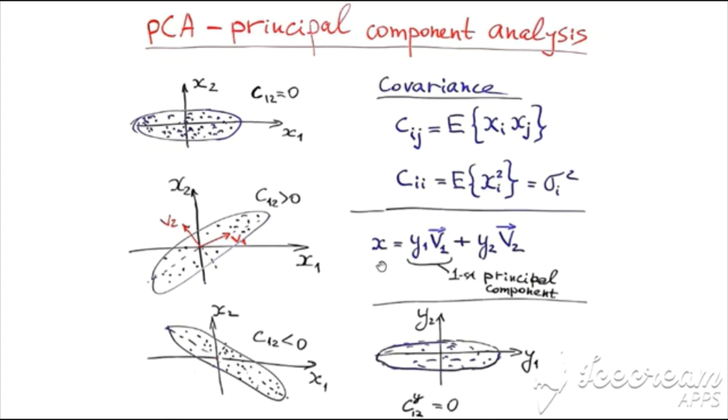In this case, our random vector X may be expressed as a scalar random component Y1 multiplied by vector V1 plus random variable Y2 multiplied by direction vector V2.